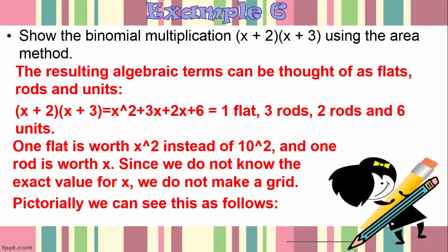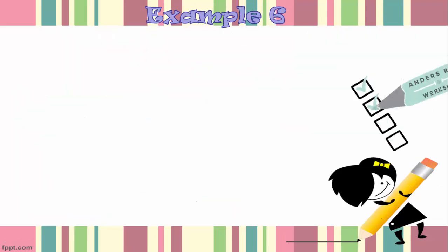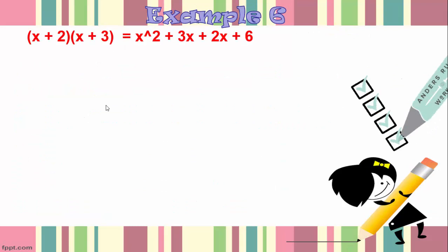Pictorially we can see this as follows. x plus 2 times x plus 3 is equal to x squared plus 3x plus 2x plus 6.